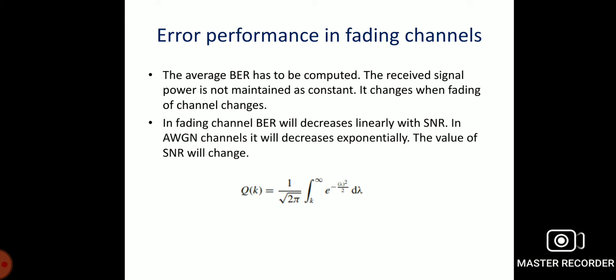In additive white Gaussian noise channels, the bit error rate decreases exponentially. The value of the signal-to-noise ratio will change the bit error rate, and the signal-to-noise ratio relationship is nonlinear. Then the linear average error probability is expressed using the Q function.